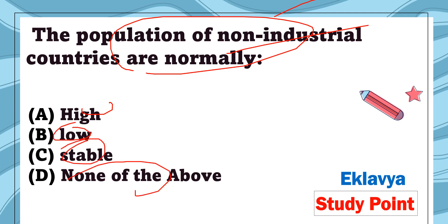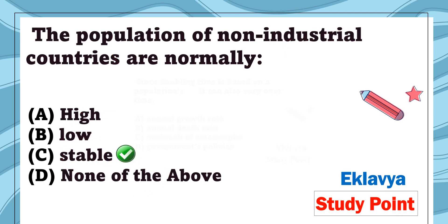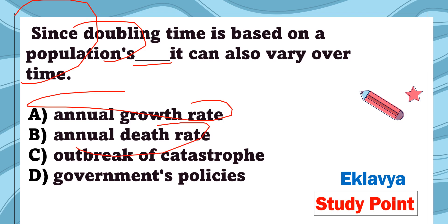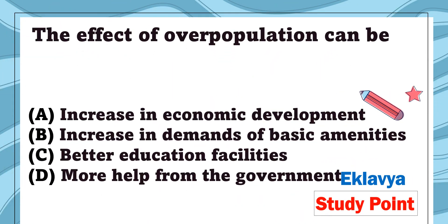Question 26: The population of known industrial countries is normally — high, low, stable, or none of the above. The correct answer is stable. Question 27: Since doubling time is based on a population's dash, it can also vary over time — annual growth rate, annual death rate, outbreak of catastrophe, or government's policies. The correct answer is annual growth rate.